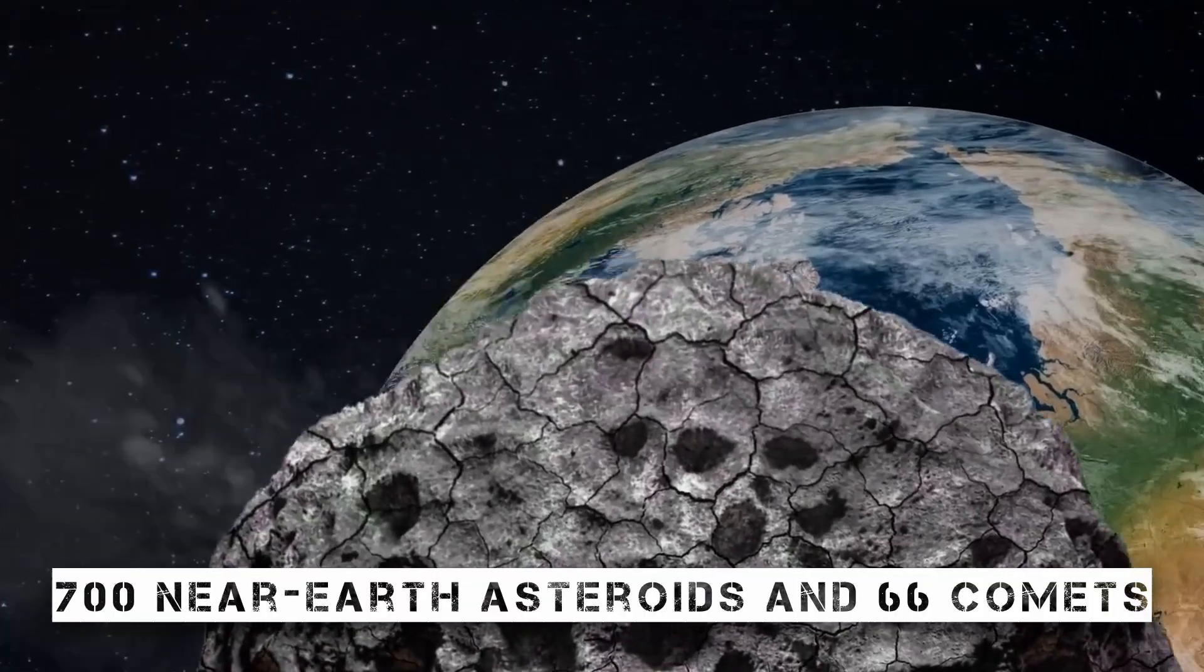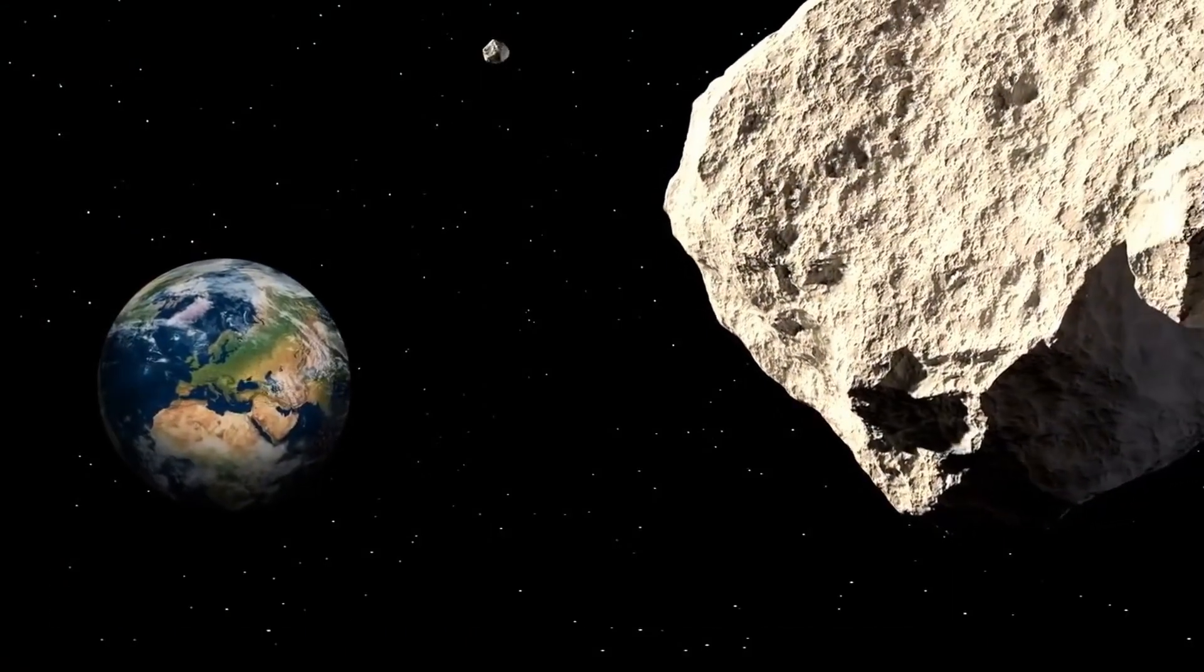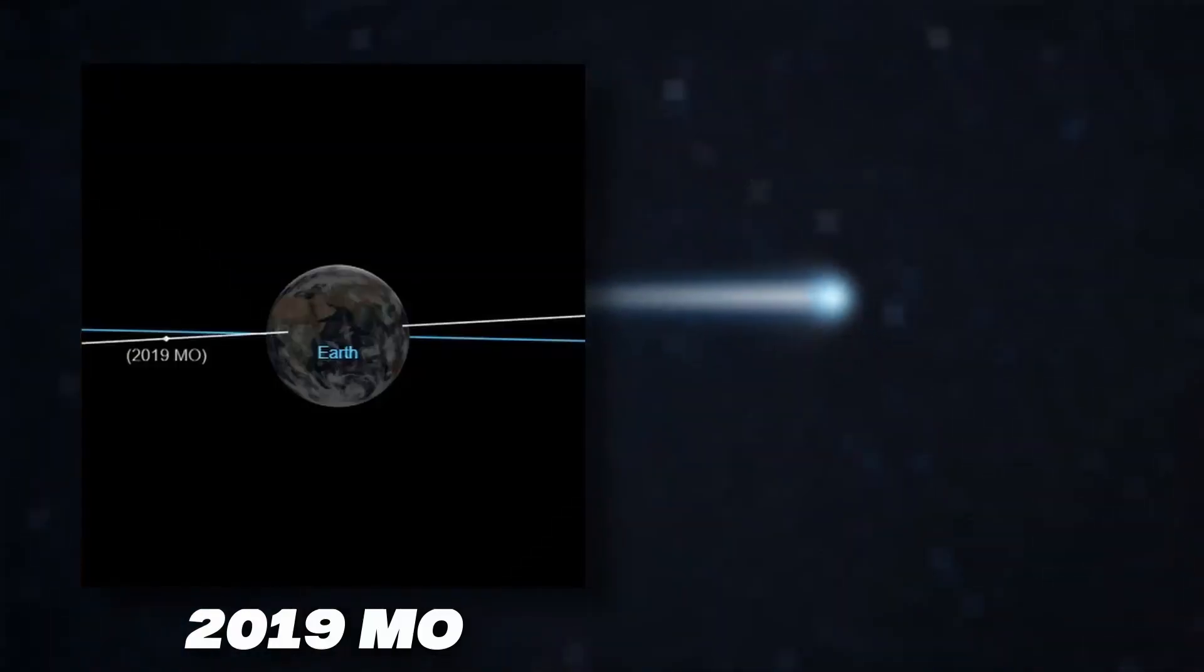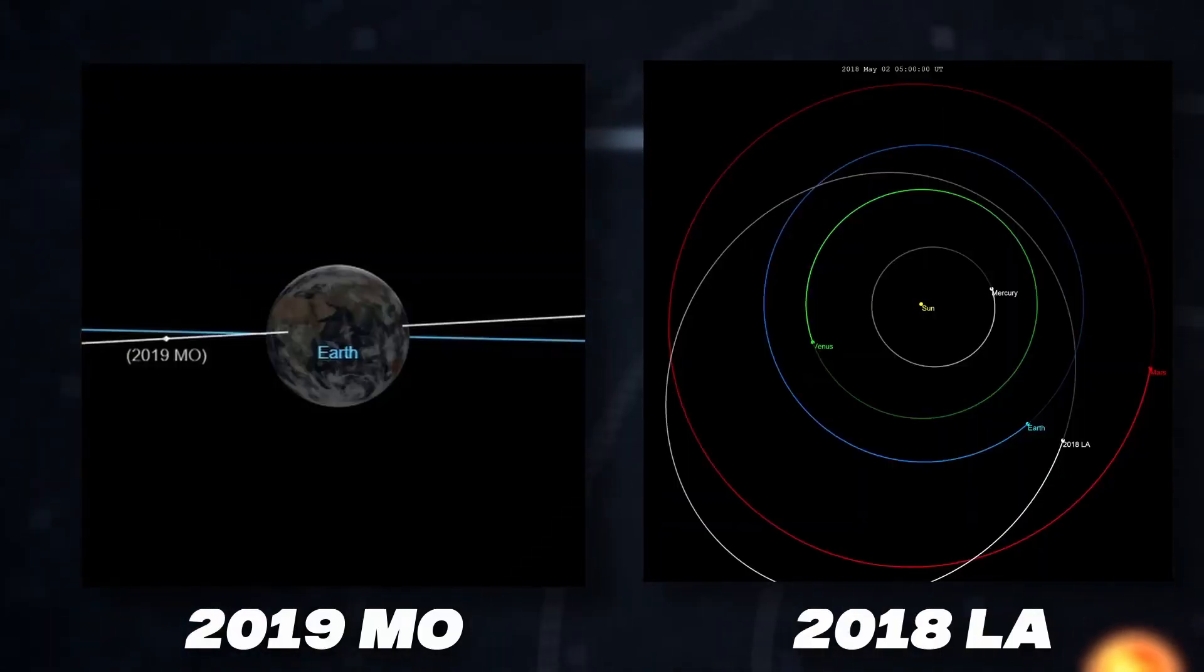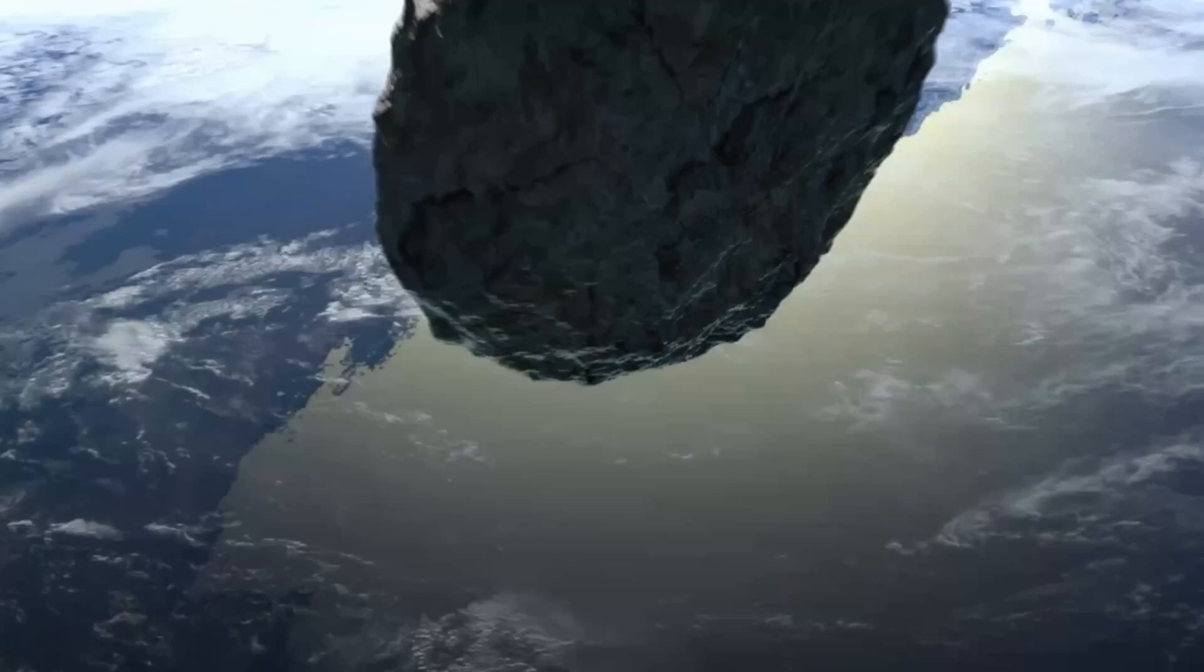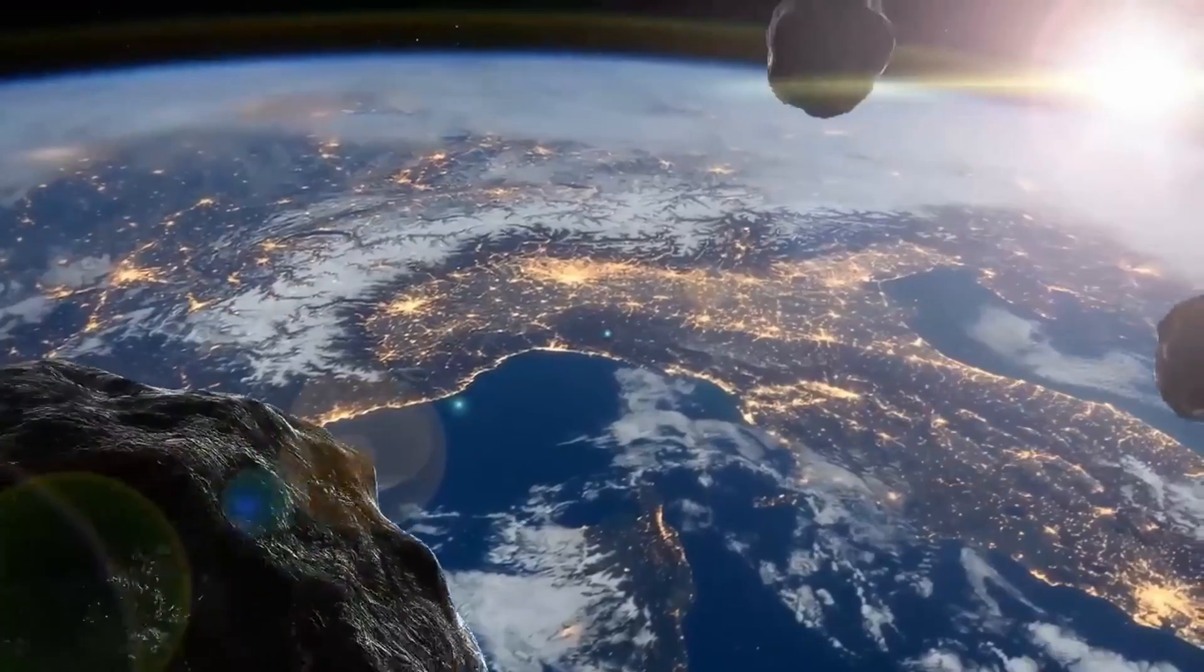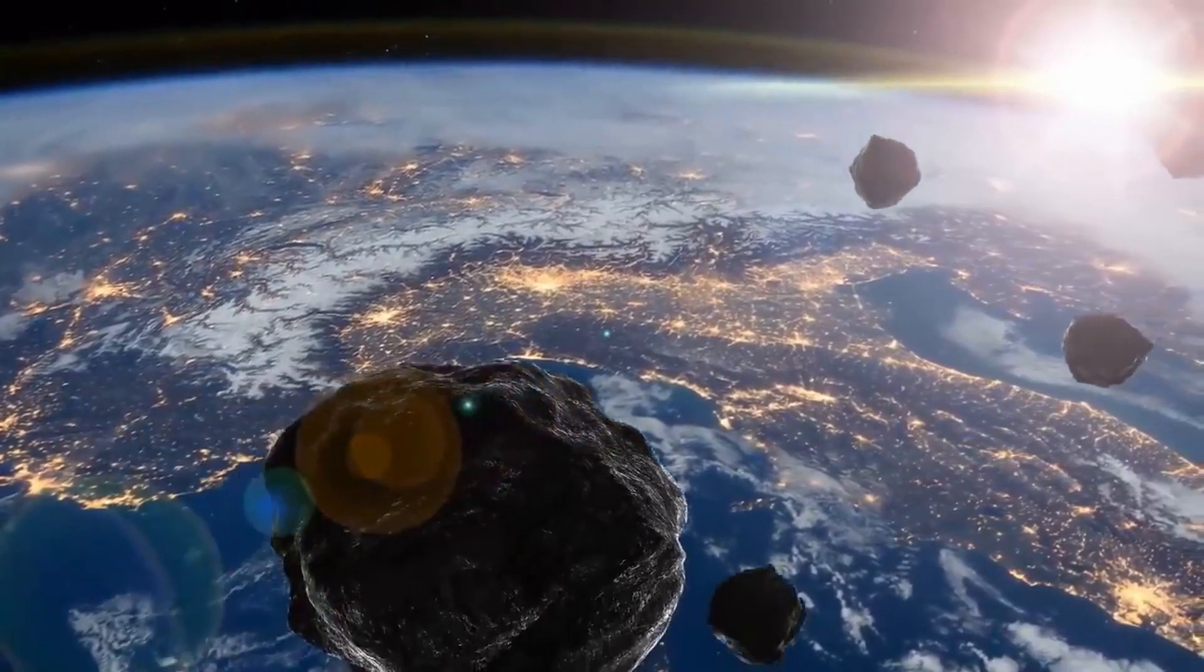ATLAS has discovered more than 700 near-Earth asteroids and 66 comets since it went online in 2017. 2019 MO and 2018 LA, two of the asteroids discovered by ATLAS, did in fact strike Earth. The former exploded off the coast of Puerto Rico, and later crash-landed close to the boundary of Botswana and South Africa. Fortunately, those asteroid fragments were small and caused no injuries.